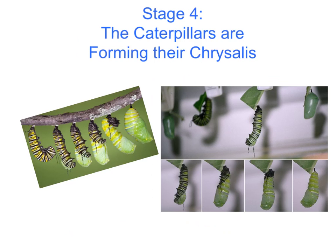Stage 4. During this stage, the caterpillars are fully grown. They are now ready to start forming their chrysalis. Look closely at the picture to see the transformation happen before your eyes.